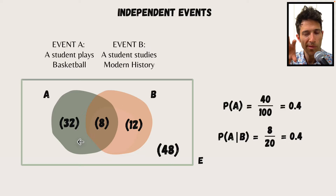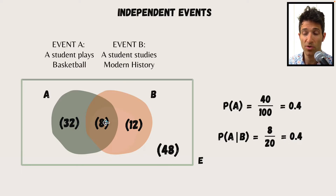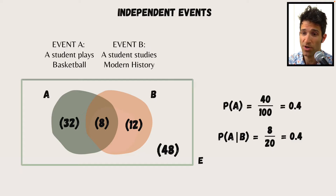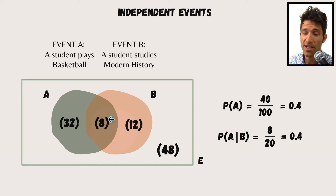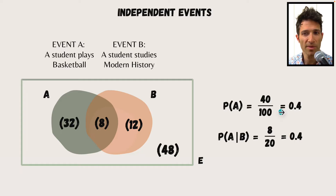The question we're going to ask is: what is the proportion of students that are playing basketball? If we just look at the basketball set, it's still 40 over 100 — 32 students play basketball without studying modern history, and 8 students play basketball with studying modern history. So ignoring modern history altogether, you still have 40 out of 100 playing basketball. Now, if we apply the condition that a student studies modern history, within event B, eight out of 20 students play basketball. So applying the condition of studying modern history didn't affect the probability of playing basketball.